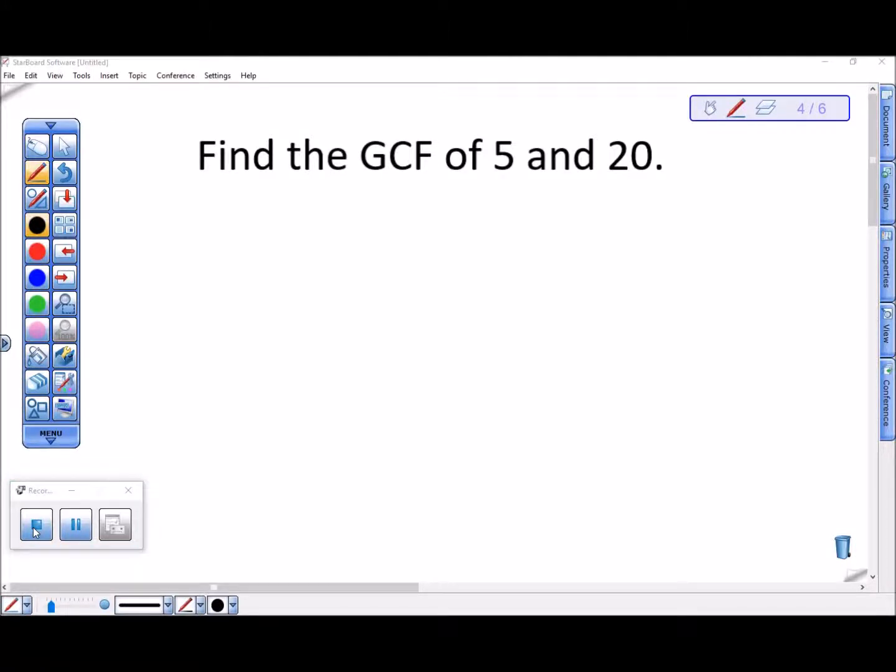Let's find the greatest common factor of 5 and 20 by using our regular steps. So first note that 5 is a prime, so it's already factored.